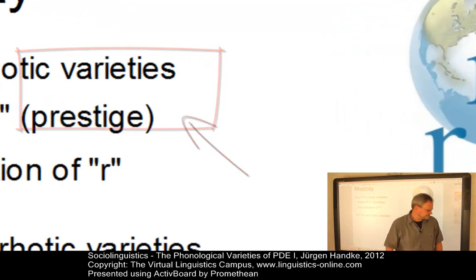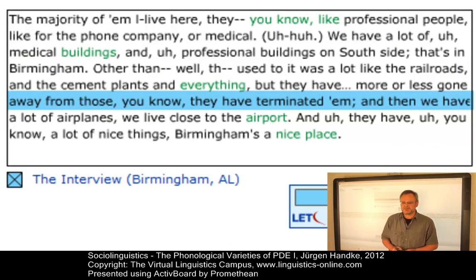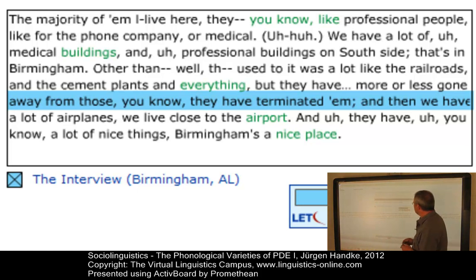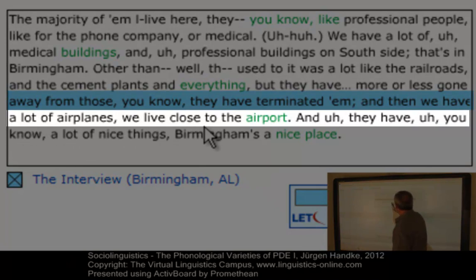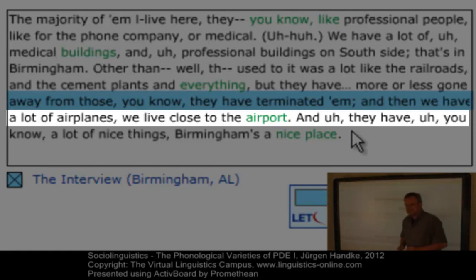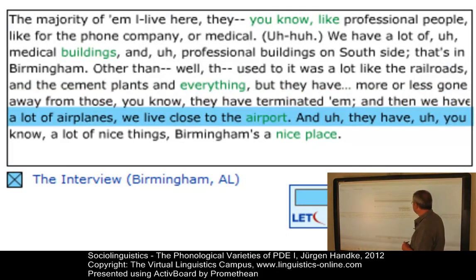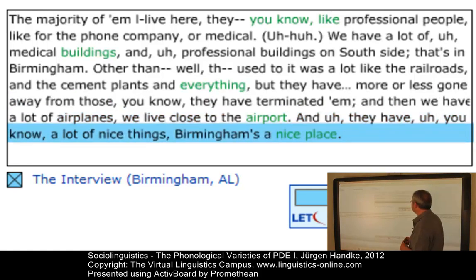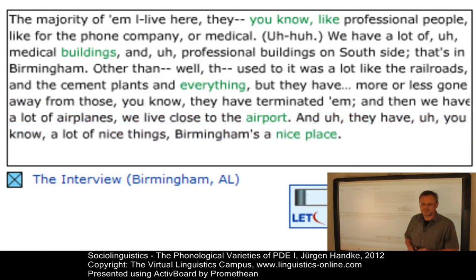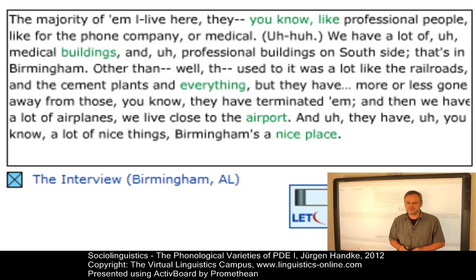Let's listen to this example. Pay attention to two words marked in the line below: 'airplanes' and 'airport'. Listen to what Bell M from Birmingham in Alabama says: 'They have terminated them, and then we have a lot of airplanes. We live close to the airport. They have, you know, a lot of nice things. Birmingham's a nice place.' This demonstrates vocalization of post-vocalic R in the south of the United States.